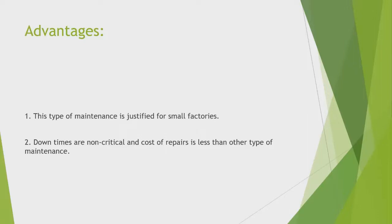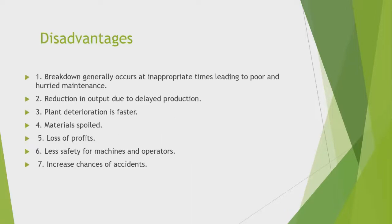This type of maintenance is justified for small factories where downtimes are non-critical and cost of repair is less than other types. Disadvantages include: breakdowns generally occur at inappropriate times leading to poor and hurried maintenance, reduction in output due to delayed production, faster plant deterioration, materials spoil, loss of profit, less safety for machines and operators, and increased chances of accidents.